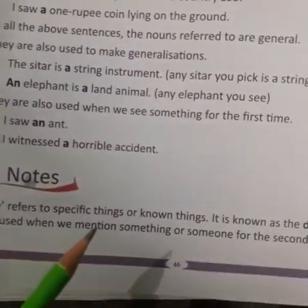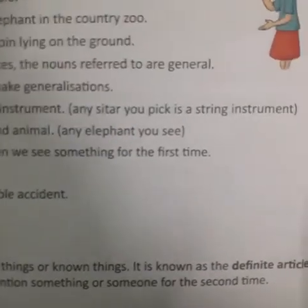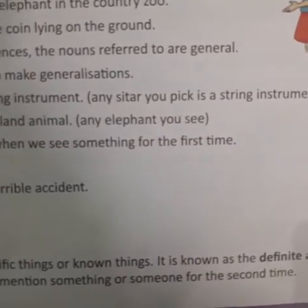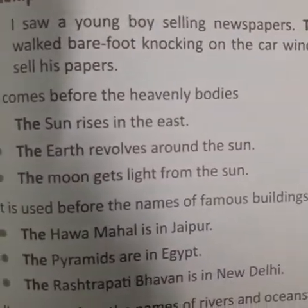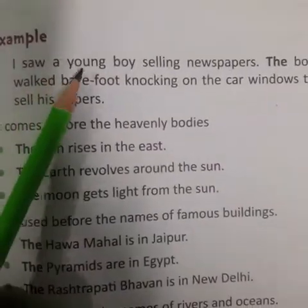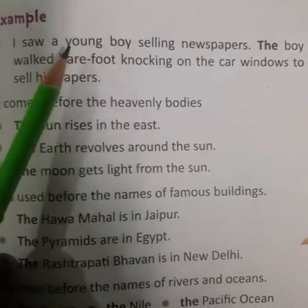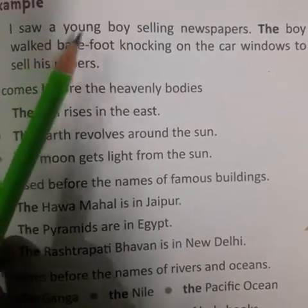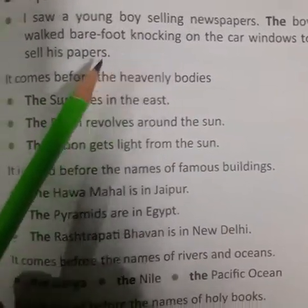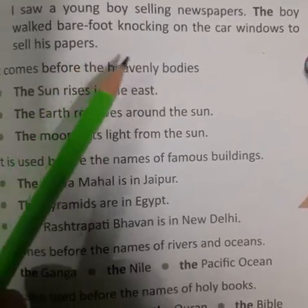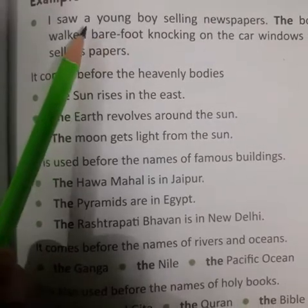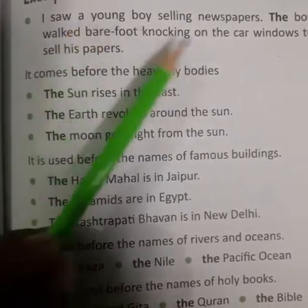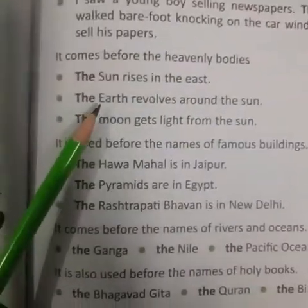Now, 'the' refers to specific things or unique things. 'The' ka use hota hai specific things ke liye. It is known as the definite article. It is used when we mention something or someone for the second time. For example: I saw a young boy selling newspaper. Now again when writing the next sentence, we use 'the' — the boy walked barefoot, knocking on the car windows to sell his newspaper. So if a person is discussed at the beginning with 'a', later the same is introduced by 'the'.